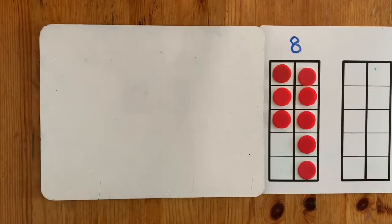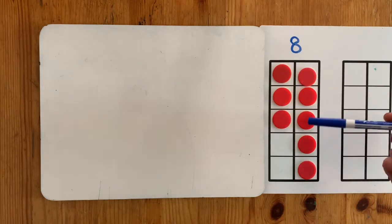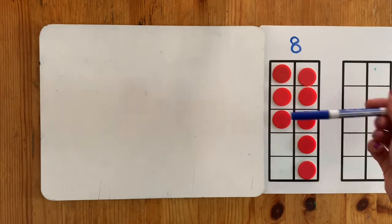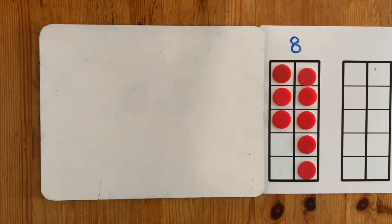Now I have my eight objects. They're right here. I just chose counters. I have one, two, three, four, five, six, seven, eight, and now I want to know what half of eight is.